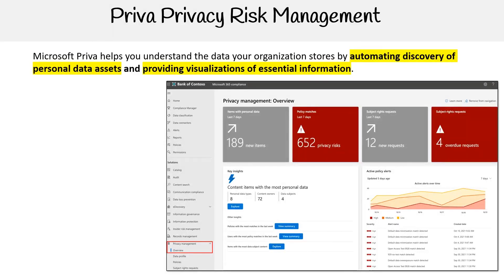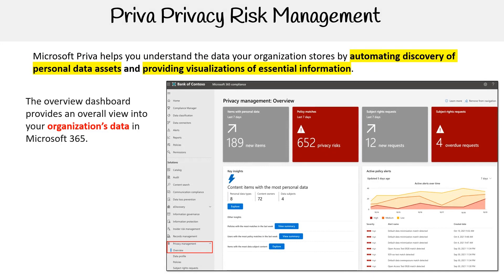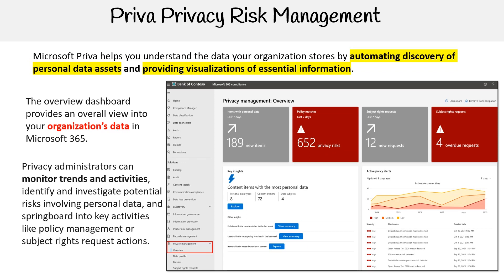Microsoft Priva helps you understand the data your organization stores by automating discovery of personal data assets and providing visualizations of essential information. The overview dashboard provides an overall view into your organization's data in Microsoft 365. Privacy administrators can monitor trends and activities, identify and investigate potential risks involving personal data, and springboard into key activities like policy management or subject rights request actions.